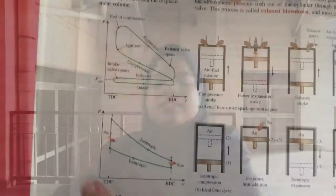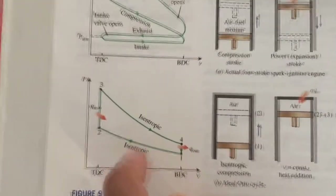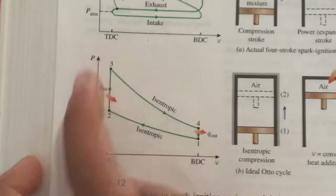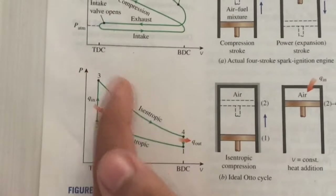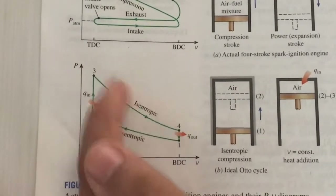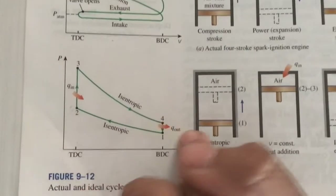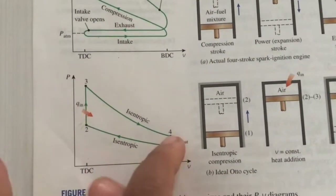For the PV graph, I will show you how each step works. From step one to step two is called isentropic compression. From step two to step three is called constant volume heat addition. From step three to step four is called isentropic expansion. From step four to step one is called constant volume heat rejection. The heat addition occurs here and heat rejection occurs here on the graph.